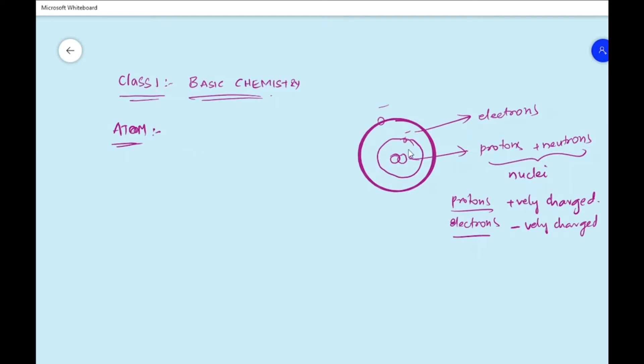Now, generally atoms are very stable because the pull between electrons and protons keeps the whole atom stable. For example, if we take out one electron, if we just remove one electron, then the atom becomes unstable. There is a chance that this atom will react with another atom.